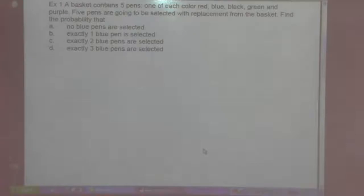Example 1: A basket contains five pens, one of each color red, blue, black, green and purple. Five pens are going to be selected with replacement, so they are all independent from the basket. Find the probability that you have no blue pens selected.